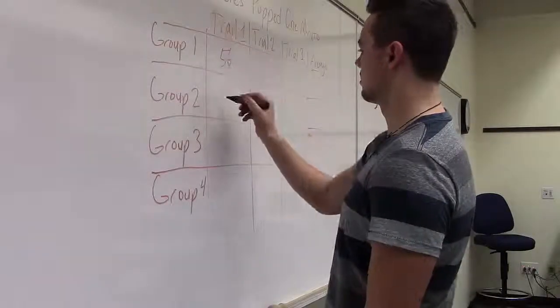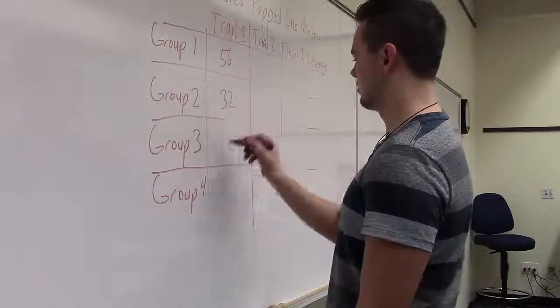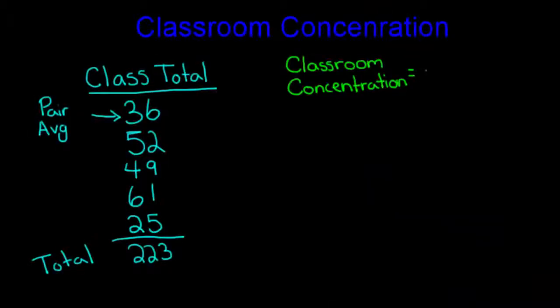Each pair should record their average bubble on a list along with their classmates. The class should then aggregate all of the pair averages into a class total. In our example, the first group had an average of 36, and the other groups followed for a class total of 223 bubbles.